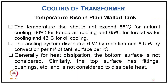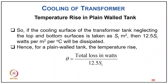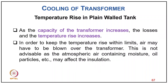For temperature rise in a plane wall tank: temperature rise should not exceed 55°C for natural cooling, 60°C for forced air cooling, 65°C for water cooling, and 45°C for oil cooling. The cooling system dissipates approximately 6 W by radiation and 6.5 W by convection per meter² of tank surface per degree Celsius. The bottom and top surfaces are not considered for heat dissipation. Total dissipation is 12.5 W/m²/°C, and temperature rise θ = total loss (W) / (12.5 × ST), where ST is the surface area of the four tank walls.